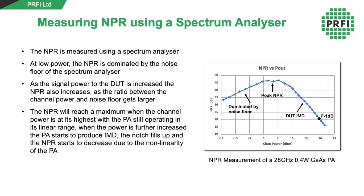At low power, the noise power ratio is dominated by the noise floor of the spectrum analyzer, and as the signal power to the DUT is increased, the noise power ratio also increases. However, when the device under test starts compressing, the noise power ratio will then decrease, and we can use this as a measure of linearity.